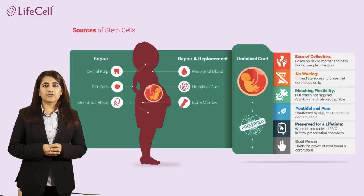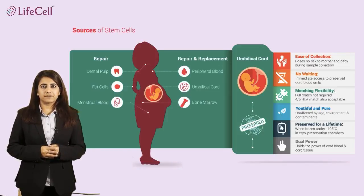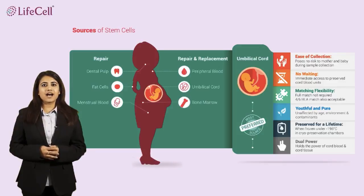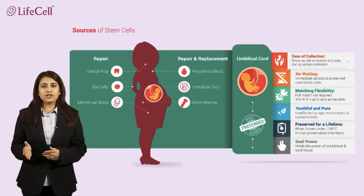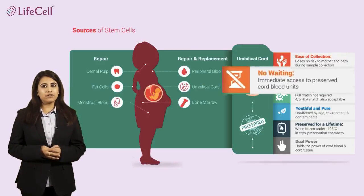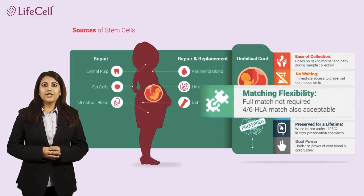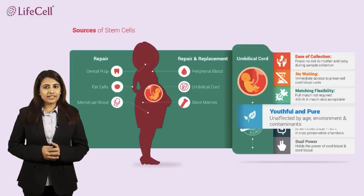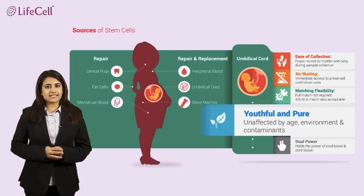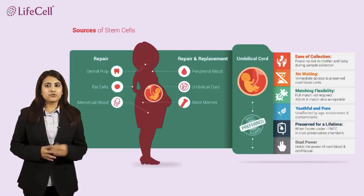Stem cells from different sources offer varied scope in applications. Stem cells from the dental pulp, fat cells, and menstrual blood offer scope in repair therapies, while peripheral blood, umbilical cord blood, and bone marrow stem cells offer scope in both repair and replacement therapy. Umbilical cord blood stem cells are a preferred choice as they are easy to collect and cause no harm to the mother or baby. They are readily available for use and the possibility of finding a matching donor is high due to their matching flexibilities.